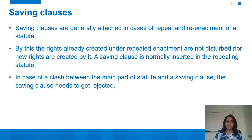The next type of internal aid is saving clauses. Saving clauses are generally attached in case of repeal and re-enactment of a statute — when a statute is repealed and re-enacted, the rights already created under the repealed enactment are not disturbed nor are new rights created by it. A saving clause is normally inserted in the repealing statute, by which certain parts of the old statute are saved or protected. In case of a clash between the main part of the statute and a saving clause, the saving clause is to be rejected — if there is a conflict, the main statute prevails.